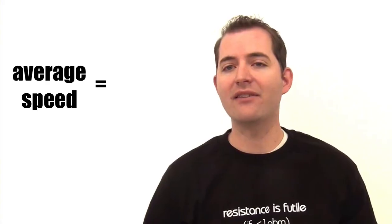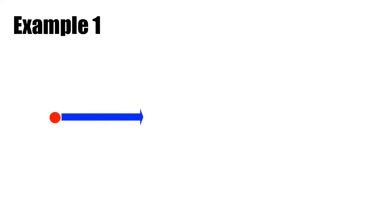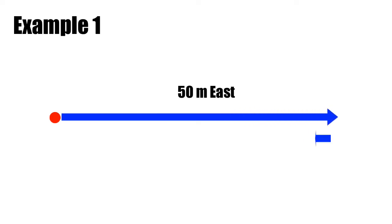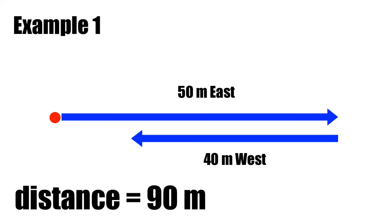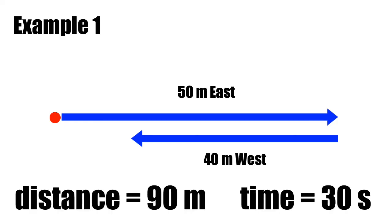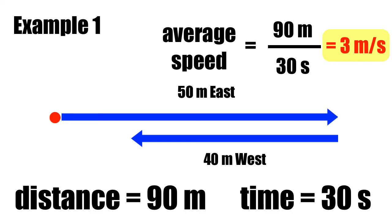The equation for average speed is: average speed equals distance divided by time. In example one, the object moves 50 meters to the right, turns around, and moves 40 meters to the left — a total distance of 90 meters. If that took 30 seconds, we calculate average speed by taking 90 meters divided by 30 seconds, giving us an average speed of 3 meters per second over the entire motion.